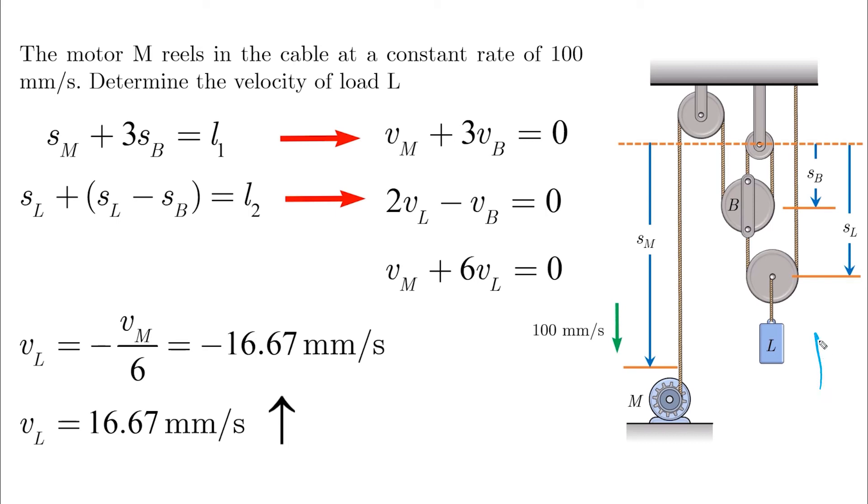So the opposite is down for L and the negative is up. And this makes sense. When the motor pulls the cable down, the load at L goes up.